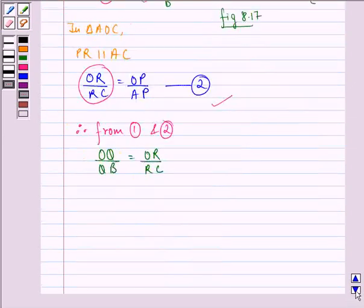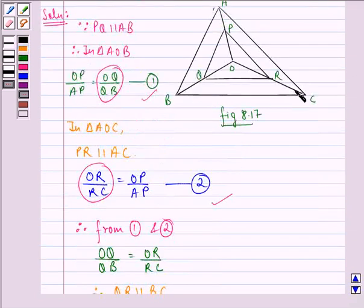Now again we see that since this is equal to this, therefore QR is parallel to BC, that means this is parallel to this.